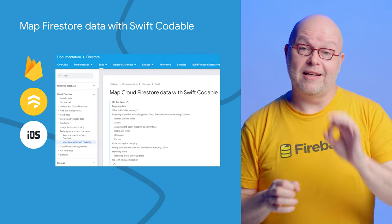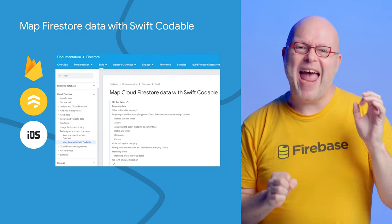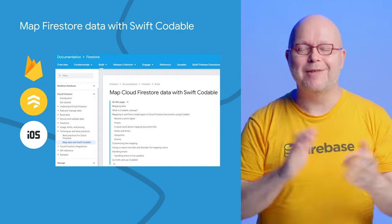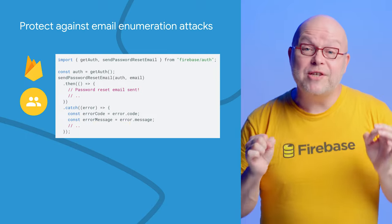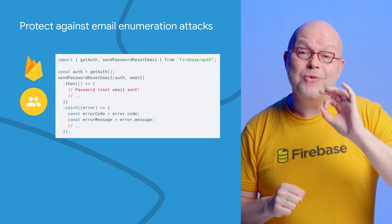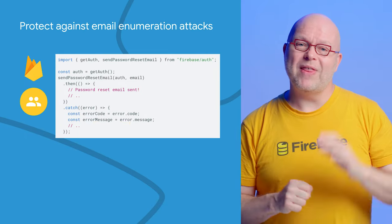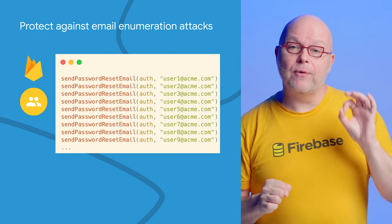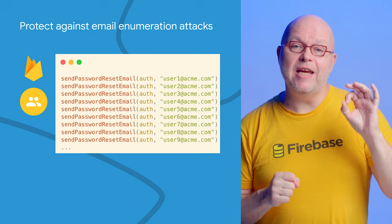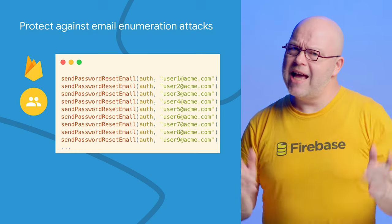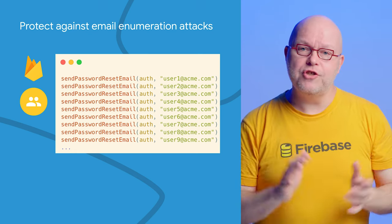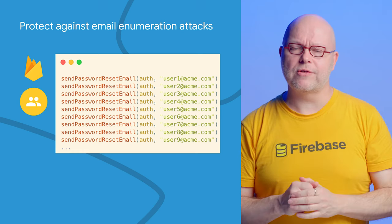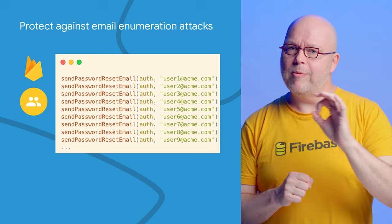We're so confident this is a better way to map data that we added it to our documentation in a page called "Map Cloud Firestore Data with Swift Codeable," linked below. The Firebase Authentication SDKs make it easy to add sign-in directly to your client-side apps with handy utility functions. This API returns a status code that indicates whether email addresses exist within your project, but unfortunately that also means malicious users can call the API repeatedly to find the email addresses of your users — known as an email enumeration attack.